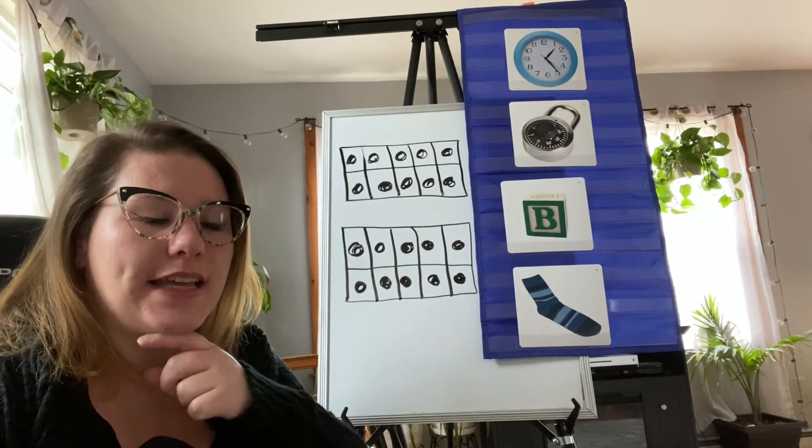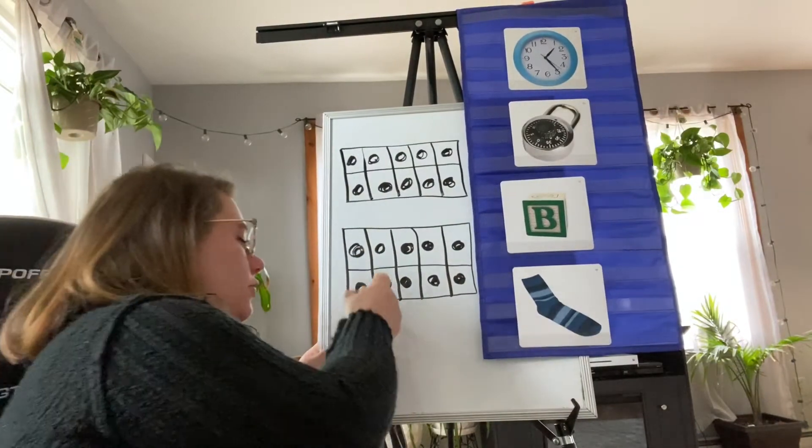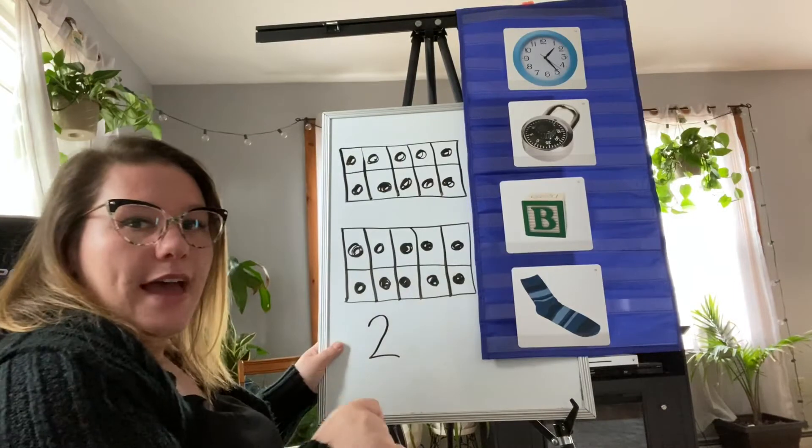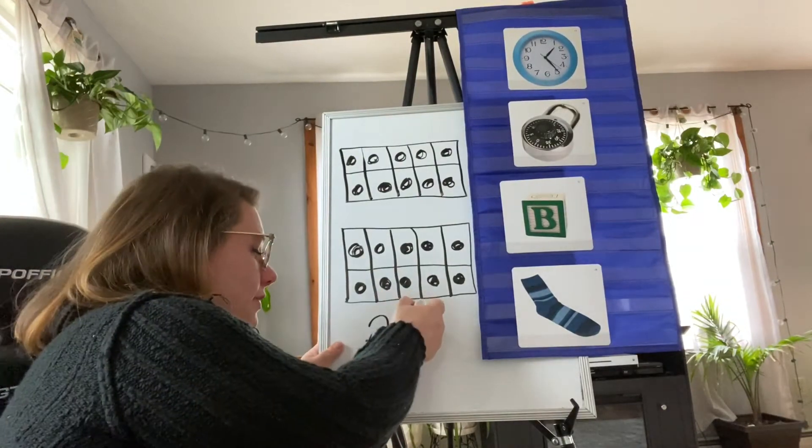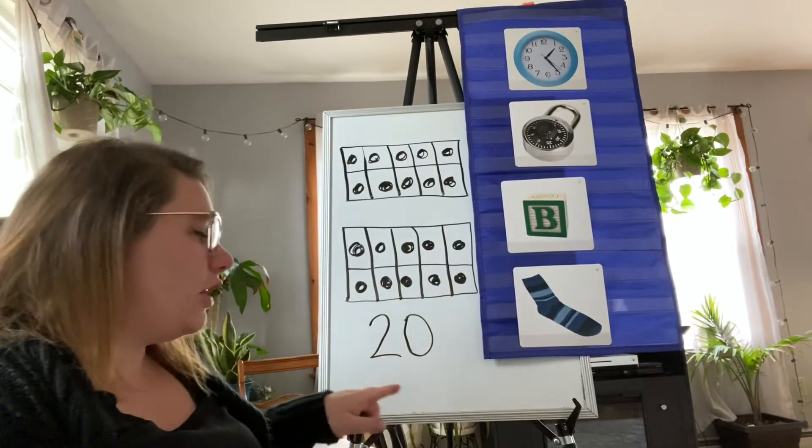Wow! How do we make a 20 again? Do you remember how many tens? Two! Two full 10 frames, right? So it looks like this: a two. And how many extra ones do we have? None. Zero. Two and a zero is 20. How do you write 20? Two and a zero. Two tens and zero ones: 20.